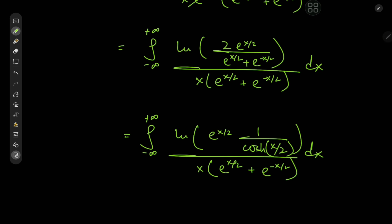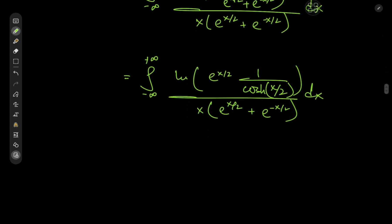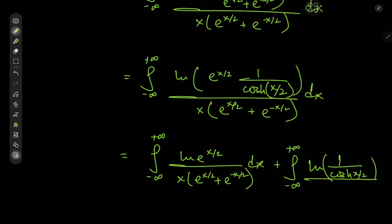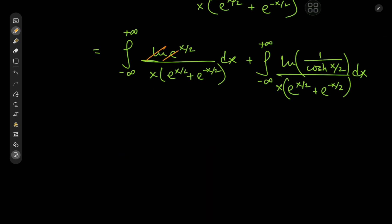We can use the properties of the logarithm to write log of a product as the sum of logarithms, and linearity of integration to get the sum of two integrals: the integral from −∞ to +∞ of log(eˣ/²) / [x · (eˣ/² + e^(−x/2))] dx, plus the integral from −∞ to +∞ of log(1/cosh(x/2)) / [(eˣ/² + e^(−x/2)) · x] dx. The second integral looks like an absolute beast, so let's deal with it first.